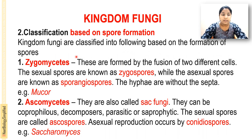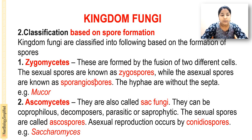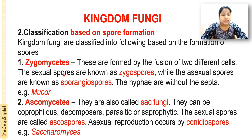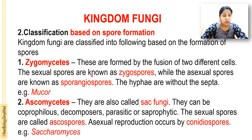Zygomycetes are formed by the fusion of two different cells. The sexual spores are known as zygospores, while the asexual spores are known as sporangiospores — spores that are present in the sporangium, held on the sporangiophore. The hyphae are without a septum — aseptate hyphae.